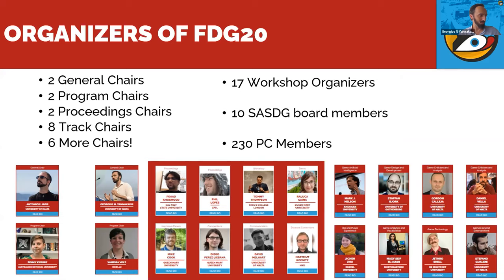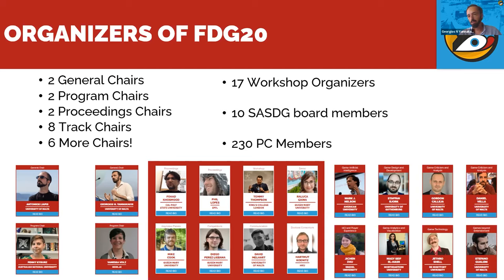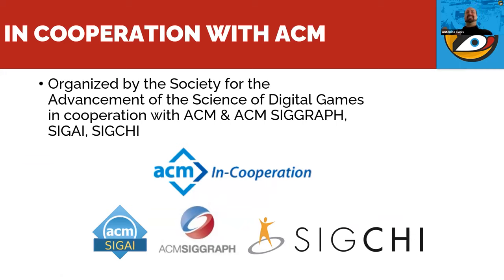There have been so many people part of this conference. We have the general program chairs, proceedings chairs, and eight tracks. We had quite a rich program with six more chairs. We had quite a few workshops and several organizers involved, as well as ten SASDG board members who helped throughout the organization. Last but not least, 230 program committee members actually reviewed your papers — so thank you all, we truly couldn't have done this without you.